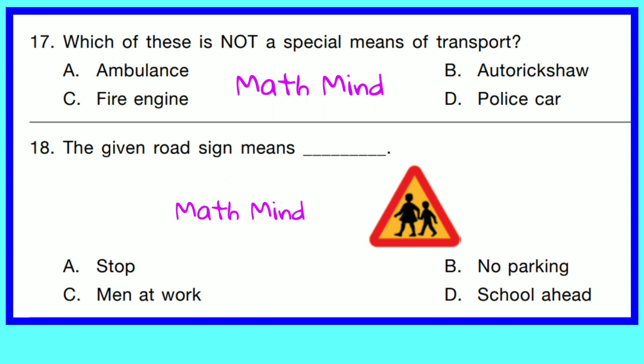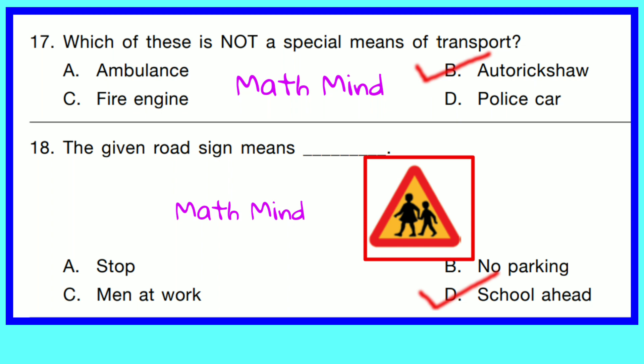Question No. 17. Which of these is not a special means of transport? Correct answer is B — Auto-rickshaw. Question No. 18. The given road sign means — the sign shown says 'School Ahead.' Option D is correct. Other road signs include: Option A — Stop, Option B — No Parking, Option C — Men at Work.